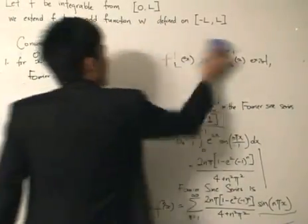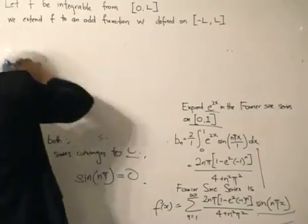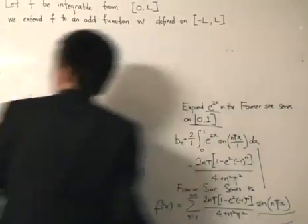What better way to illustrate this than a nice diagram comparing the Fourier sine series and the Fourier cosine series of the same function.